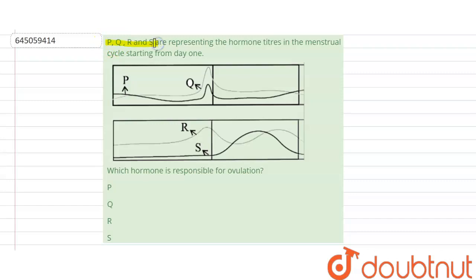P, Q, R, and S are representing the hormone titres in the menstrual cycle starting from day one, and we have to tell which hormone is responsible for ovulation in the given diagram: P, Q, R, or S.